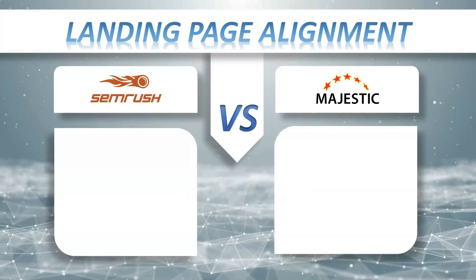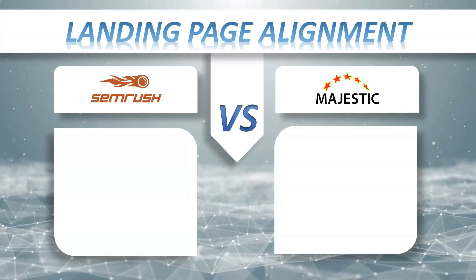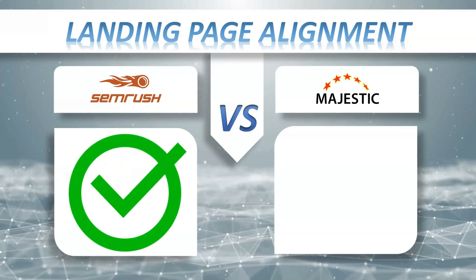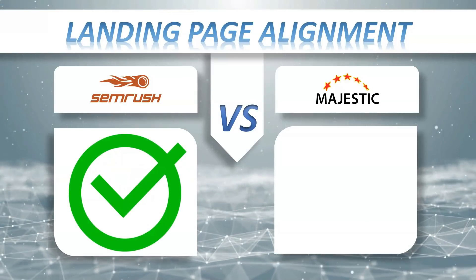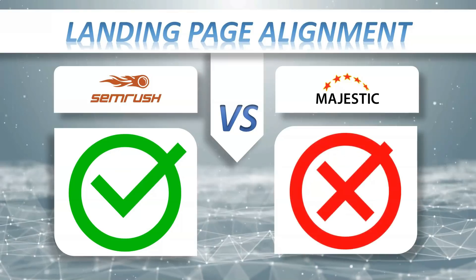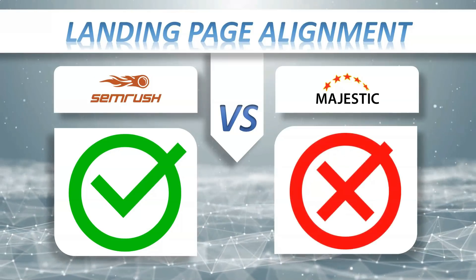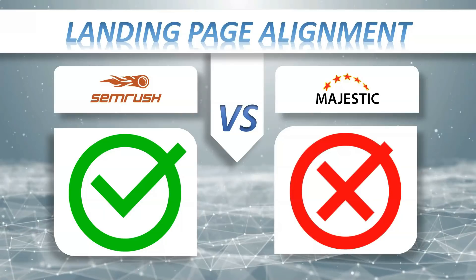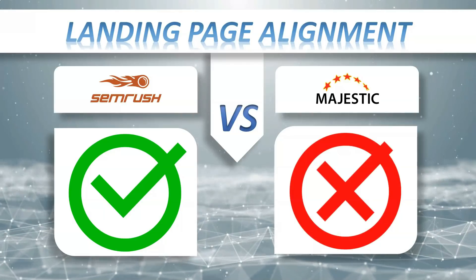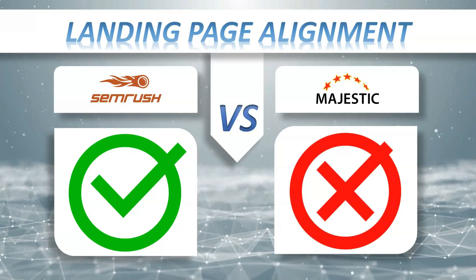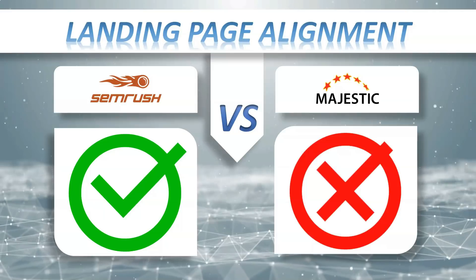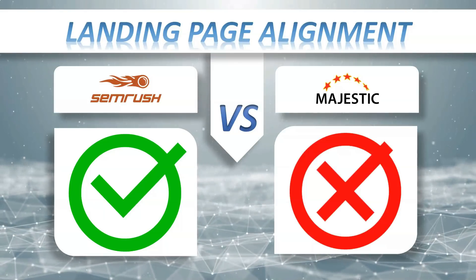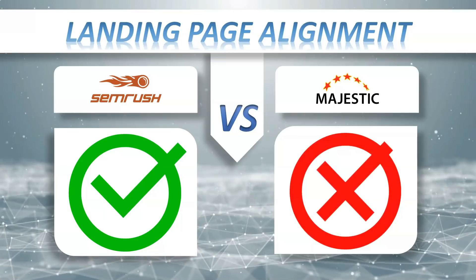Landing page alignment: SEMrush yes, Majestic minus. When you're tracking your SEO or PPC efforts, you'll want to know what pages on your site are performing the best. Seeing your competitors' top performing landing pages can also help you understand what works well with your audience.